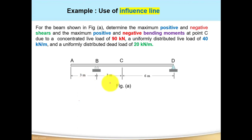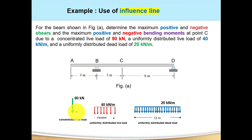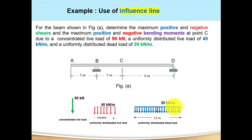Let us understand what the loads represent. The 90 kN is a concentrated live load — this load can be placed anywhere along the length of the beam to get maximum positive and negative effect. The 40 kN/m distributed load also has a variable length, so it can also be placed anywhere along the beam. However, the 20 kN/m distributed load is a dead load — it is the self-weight of the structure — so it cannot be moved. The 90 kN and 40 kN/m loads can be moved to any location expected to give maximum positive and negative effect for shear and bending moment.